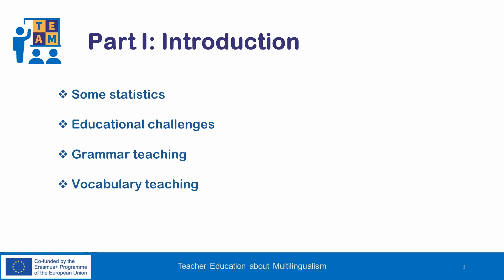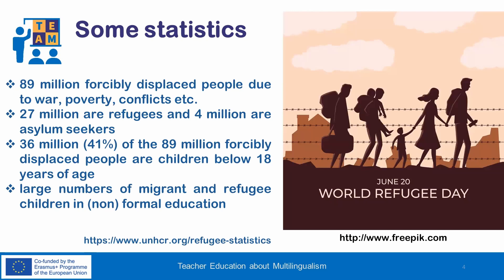According to the records of the United Nations High Commissioner for Refugees, around 89 million people have been forced to leave their countries due to war, poverty and other reasons, while 27 million of them are refugees and 36 million of them are children. The large numbers of migrant and refugee children in formal and non-formal education have enriched cultural and linguistic diversity in school, but at the same time education needs to face new challenges.